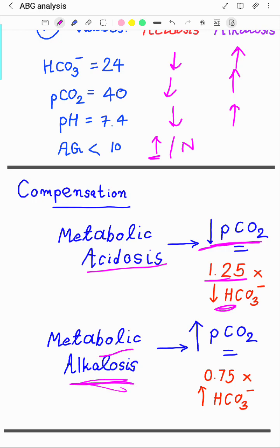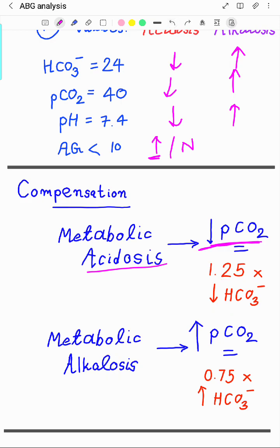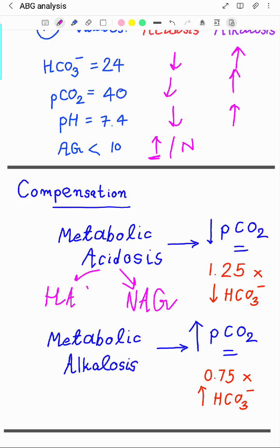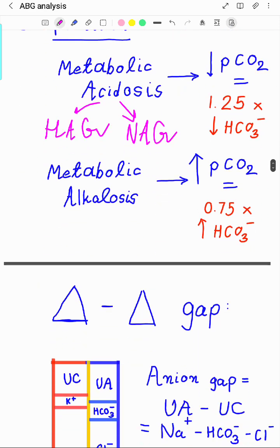In the same way, in metabolic alkalosis, the increase in carbon dioxide will be 0.75 times the increase in bicarb. Remember these two values: 1.25 for metabolic acidosis compensation and 0.75 for metabolic alkalosis compensation. Now let's move to the concept of anion gap. Metabolic acidosis can be high anion gap type (HAGMA) or normal anion gap type (NAGMA).